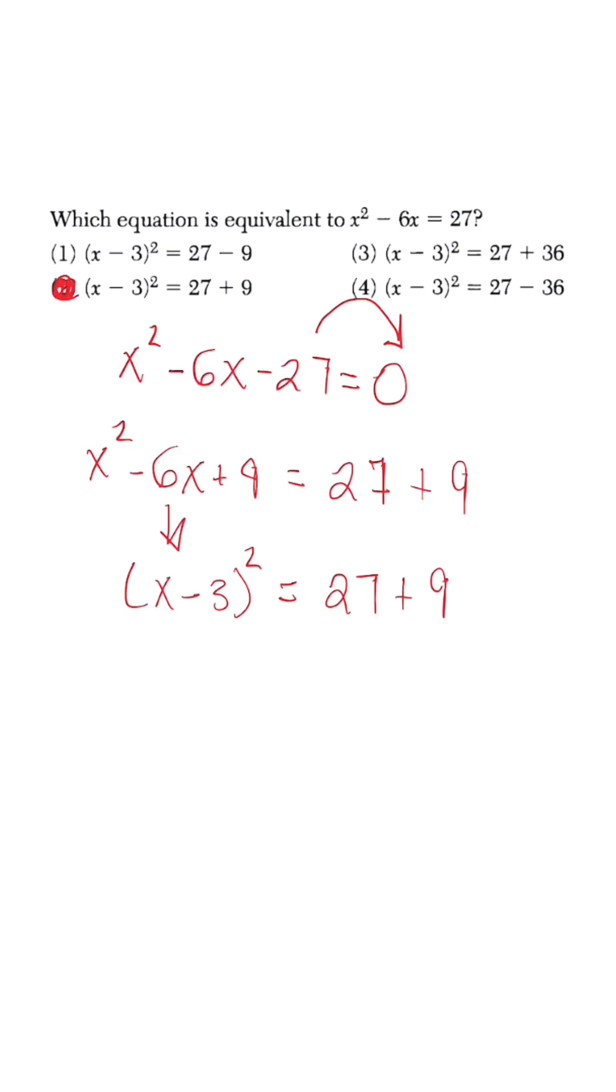But let's say they wanted you to actually solve this. We have x minus 3 squared is equal to 36, so we come in here and take the square root to get rid of the exponent. We have x minus 3 is equal to plus or minus the square root of 36 which is 6.